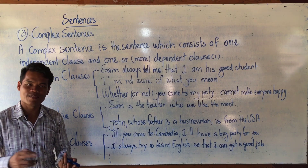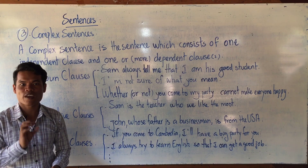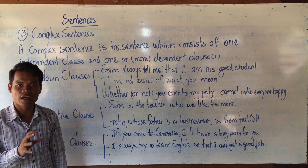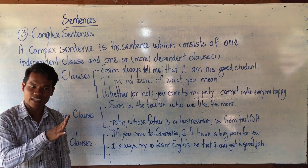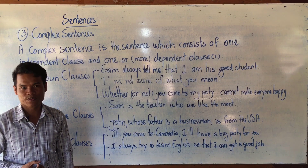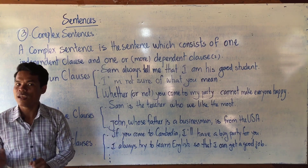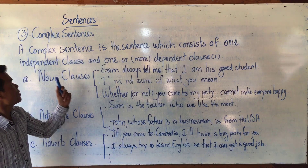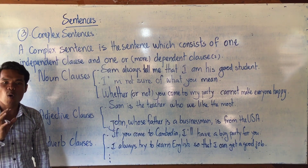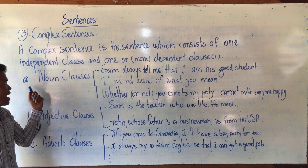When talking about complex sentences, we always think of three types of clauses: noun clauses, adjective clauses, and adverb clauses. These three types of clauses have already been taught to you. If you want to be clear about them, go back to my previous videos where everything is explained in detail.